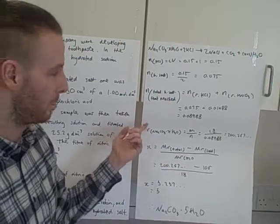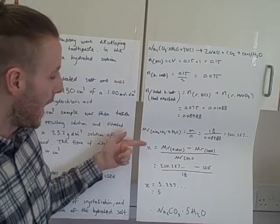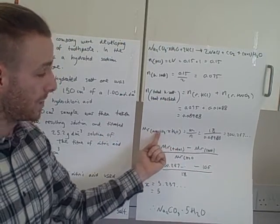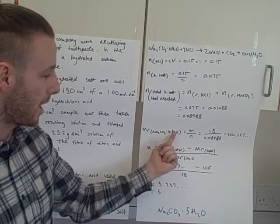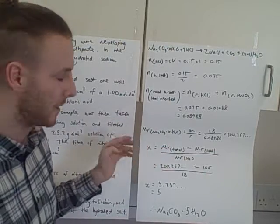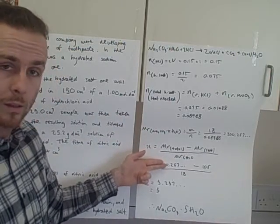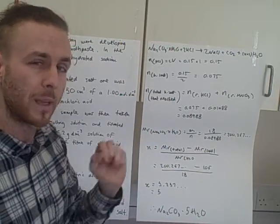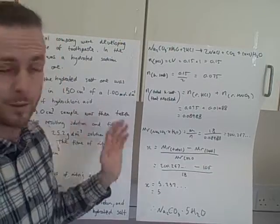Plugging everything in gives an Mr of slightly over 200 g/mol. Now comes the fancy trick for finding the water of crystallization: X equals (Mr total minus Mr of the salt) divided by the Mr of H₂O. Learn and memorize that formula — you can derive it if you forget, but it's worth knowing. I know the total Mr, I can calculate the Mr of sodium carbonate from the periodic table (using the larger mass numbers), divide by the Mr of water which is 18, and I get X equals approximately 5.2.